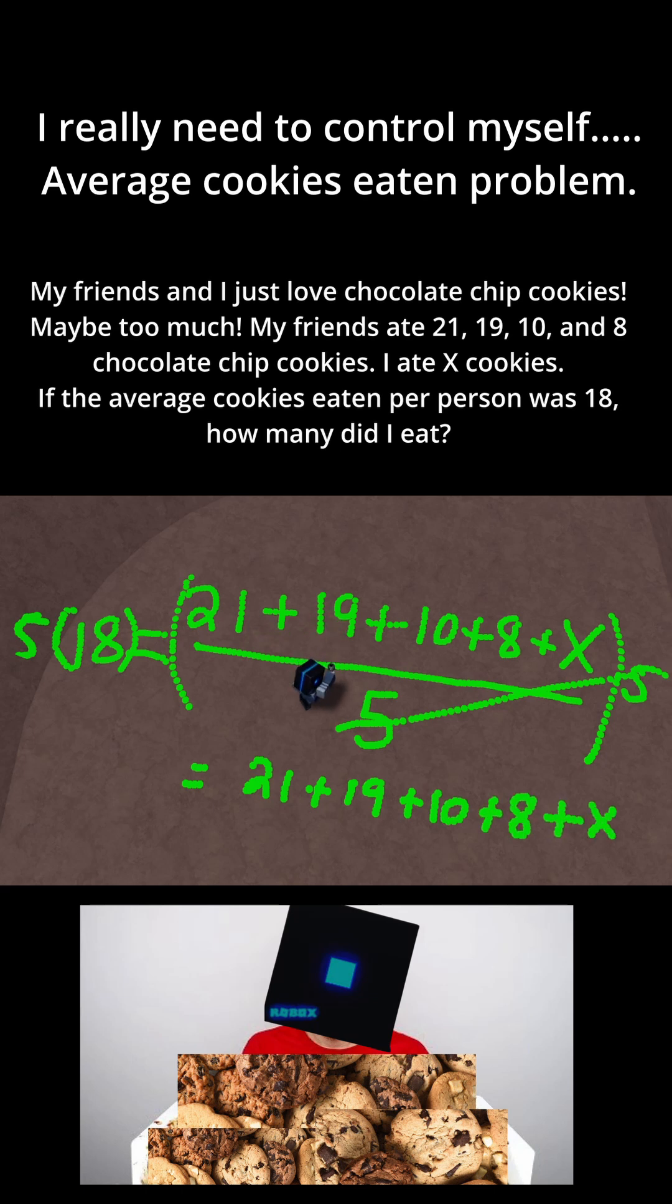And 5 times 18 is just 90. Let's simplify this. 21 plus 19 plus 10 plus 8, if you do all that, that's just 58. So 90 equals 58 plus x, and then to solve for x, subtract 58.